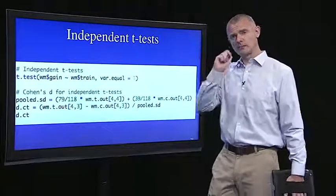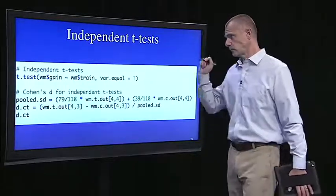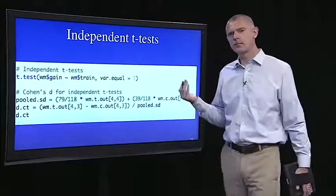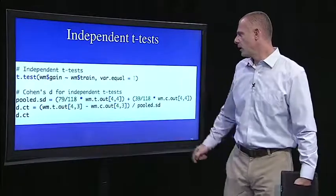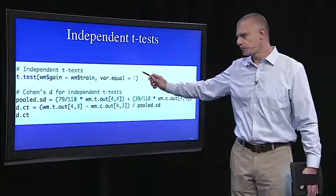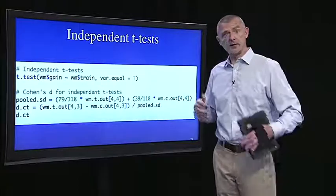Then it's open paren, dependent variable, tilde, independent variable. So our dependent variable is the gain score. Our independent variable is training. Did they do training or did they not do training? I set this last part, var.equal equals true, because I did check it out. I did a Levine's test, which we'll cover in the ANOVA segment.